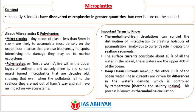The last important article is on microplastics. Recently, scientists have discovered microplastics in greater quantities than ever before on the seabed. Microplastics are tiny pieces of plastic less than 5 millimeters in size. They are likely to accumulate most densely on the ocean floor in areas that are also biodiversity hotspots, intensifying the damage they may do to marine ecosystems. Polychaetes, or bristle worms, live within the upper layers of sediment and actively mine it, and so can ingest buried microplastics that are decades old.